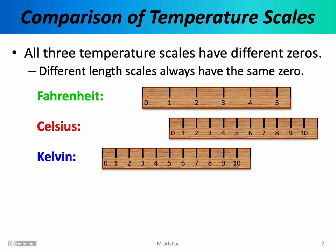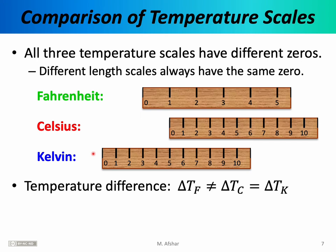This is a little like representing the three temperature scales by three rulers whose zeros are placed at different points on an object — zero Fahrenheit does not correspond to zero Celsius, and that in turn does not correspond to zero Kelvin. In many equations we'll encounter, we'll be interested in the change in temperature, delta T. When we encounter those equations, we must be careful: delta T in Fahrenheit is not necessarily equal to delta T in Celsius. However, the increments on the Celsius scale are equal to those on the Kelvin scale, so a change of five degrees Celsius equals a change of five degrees Kelvin.